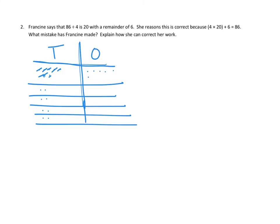Now if I were working on this problem, I would then move to the smaller units, which is the ones. We still have 6 ones left over. And aha — I think I see the mistake that Francine already made. She went ahead and did the division of the 8 tens, and she got those all split up into 4 groups. But she never moved along to the ones. Let's see if that reasoning is correct.